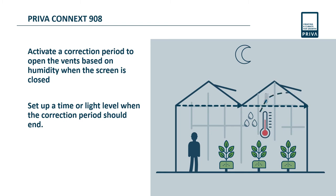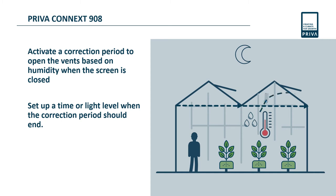Activate a correction period to open the vents based on humidity when the screen is closed. Set up a time or light level when the correction period should end.